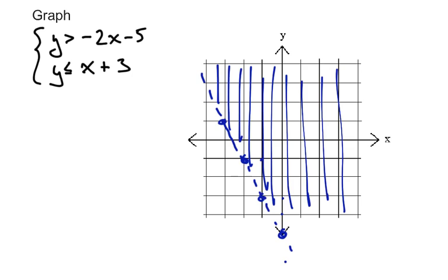So this region is all the solutions to the first equation. All the solutions to the second equation, we'll have to draw a line again. It has a y-intercept of 3 and a slope of 1.